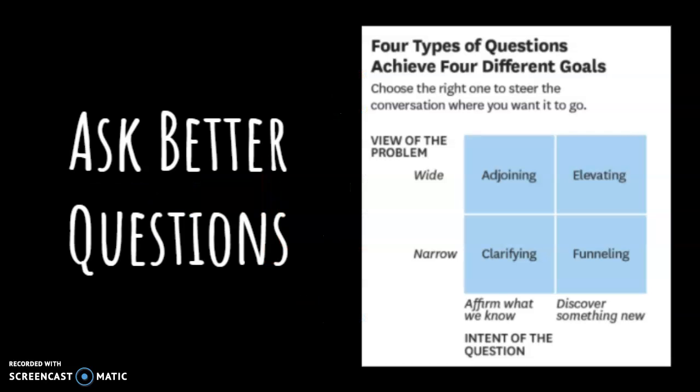Moving on to the next component: asking better questions. Here's an example of four different types of questions we can ask. Clarifying questions help us better understand what has been said. In many conversations, people speak past one another, and asking clarifying questions can help uncover the real intent behind what is said. Questions like 'Can you tell me more?' and 'Why do you say so?' fall into this category. People often don't ask these because they make assumptions and fill in the missing parts themselves — which causes us to miss patients who have a disconnect that we don't notice.